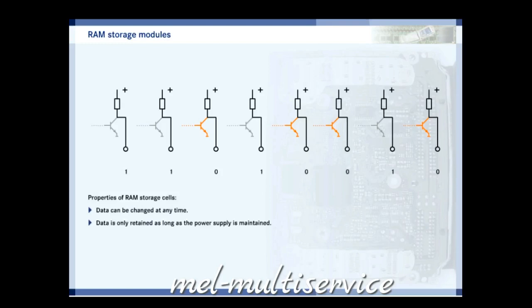RAM units only store their content as long as they receive a power supply. If the power supply is interrupted, the data is lost, which is why it is called volatile memory. You can find more details on this in the additional information.